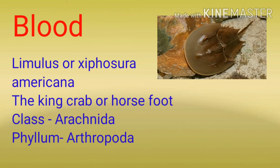अब हम बात करते हैं animal blood से बनने वाली medicine की। यहाँ पर हमने example लिया है Limulus और Xiphosura americana का, जिसका common name है the king crab और horsefoot। इसके blood से medicine बनती है। Class Arachnida और phylum Arthropoda।